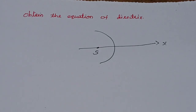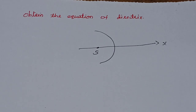Hello everyone. In this video, I will ask a question about a University 5th question. This is the equation of directrices. If you say a directrix, you will see a conic. A conic is a parabola, ellipse, or hyperbola.